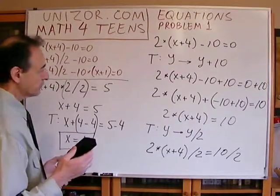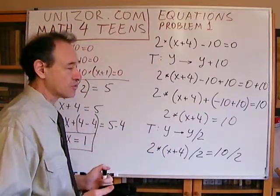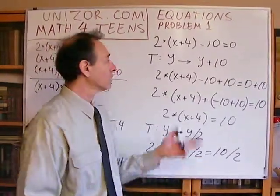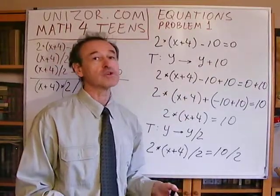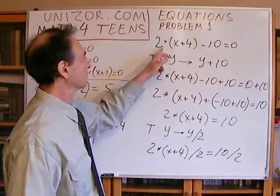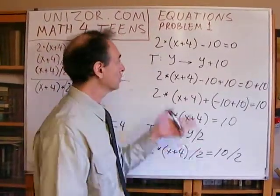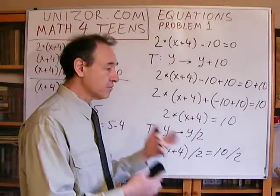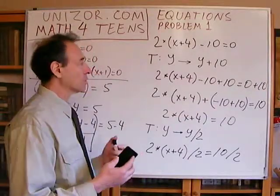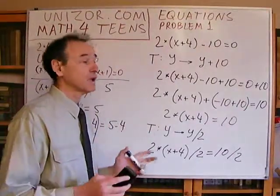I went into very small details of how to solve this particular equation as a demonstration of what is actually happening behind very simple rules — like we can transfer 10 to the right side of the equation with a changed sign, giving us 2 times x plus 4 equals 10 immediately. But we did it in more detail to show that there is theoretical background for all these seemingly obvious rules.